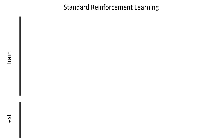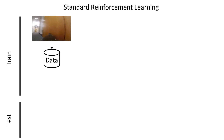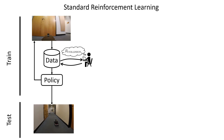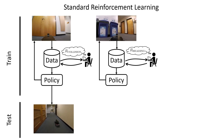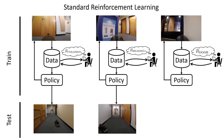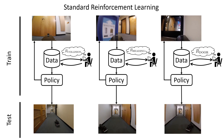Standard reinforcement learning methods typically work as follows. First, the robot gathers data in the environment according to its current policy. A human then labels the reward signal, which tells the robot what it should do, such as to avoid collisions. This data is then used to train a control policy, which in turn is used to gather even more data, and the reinforcement learning cycle continues. At test time, the policy can be deployed for the specified task. If you want your robot to accomplish a different task, you would specify a different reward function and repeat this process again and again.